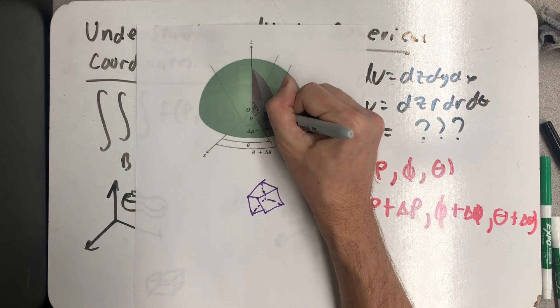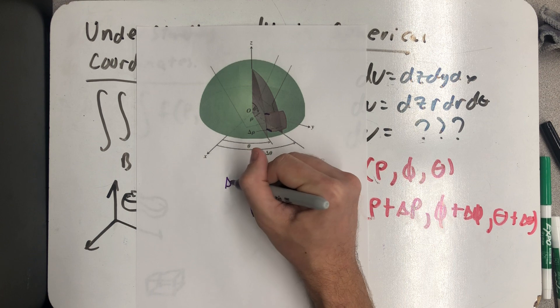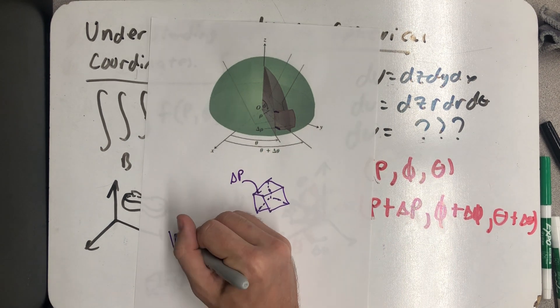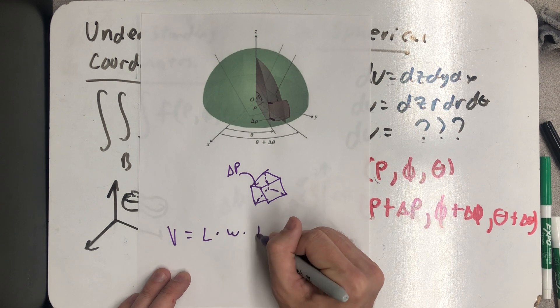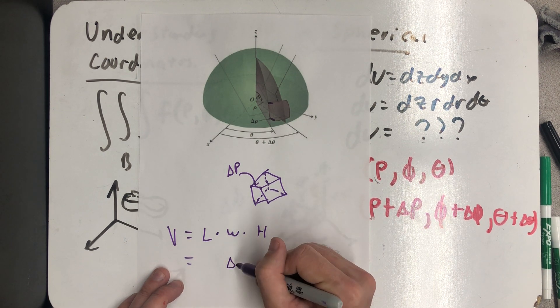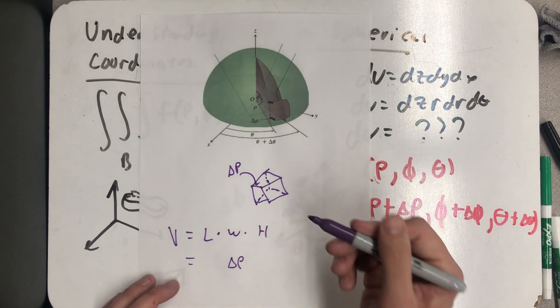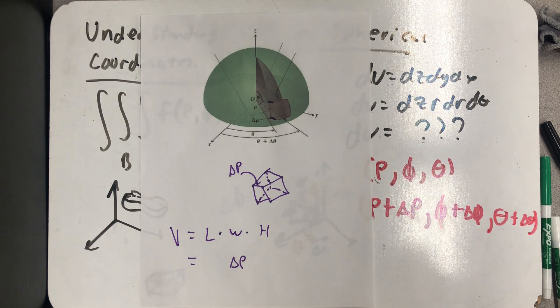Well, when I went from here to here, right, that was that Δρ. So if I'm thinking about volume as a length times a width times a height, well, I'm going to let that be the width. It doesn't really matter which one you let it be, but that would just be Δρ.